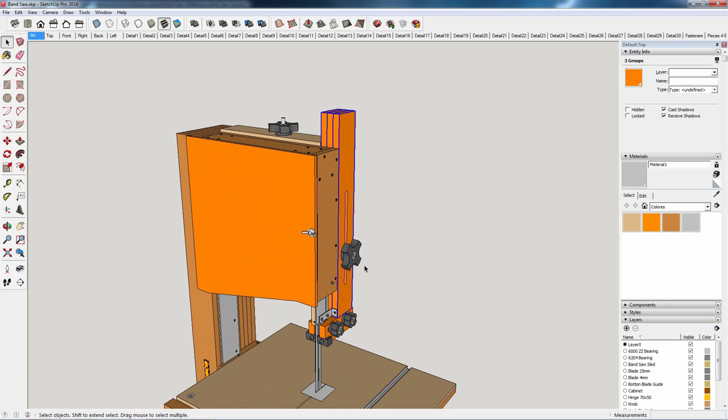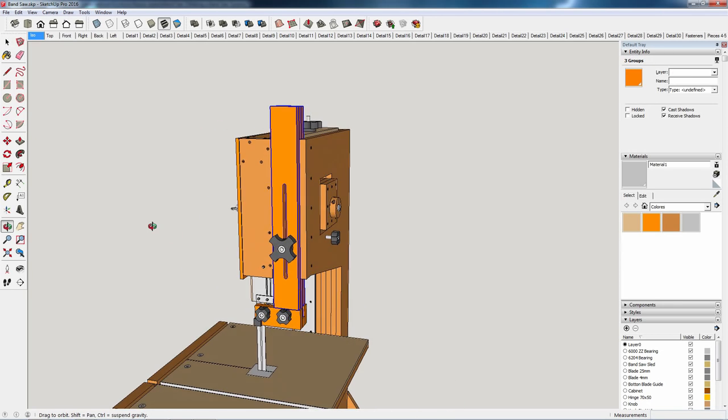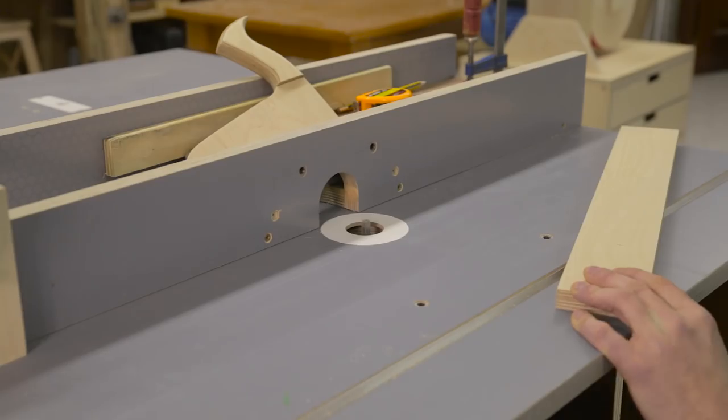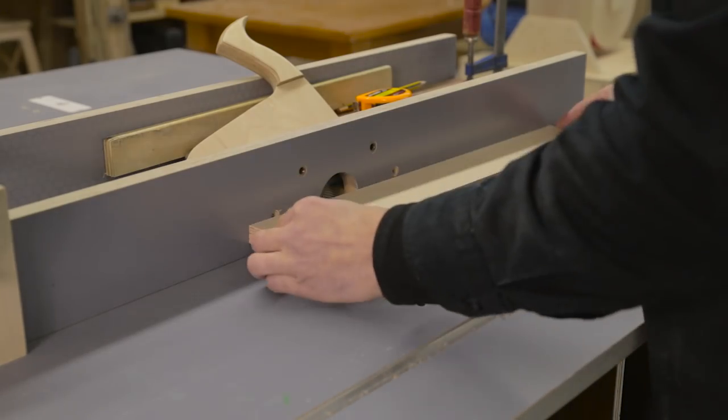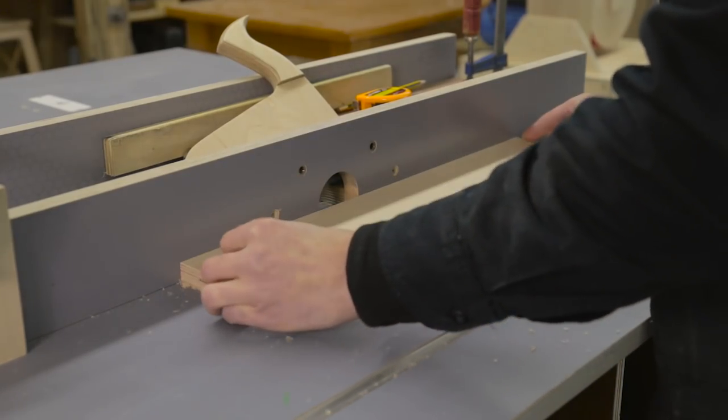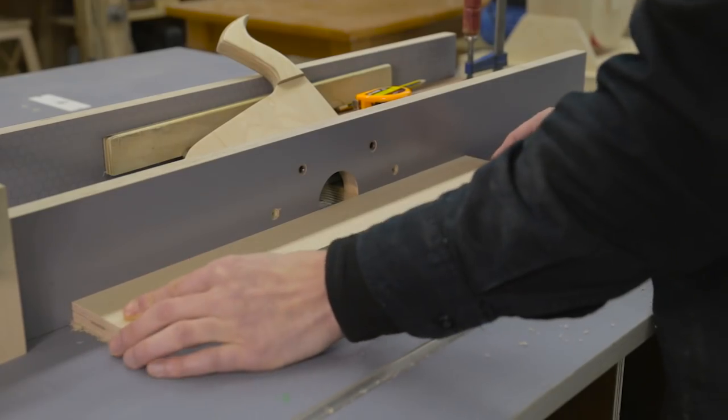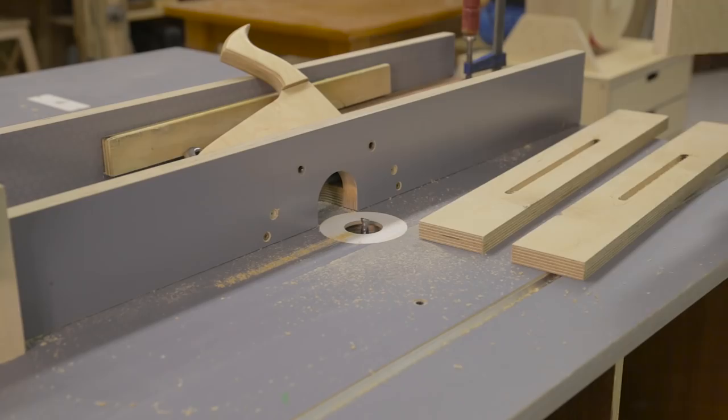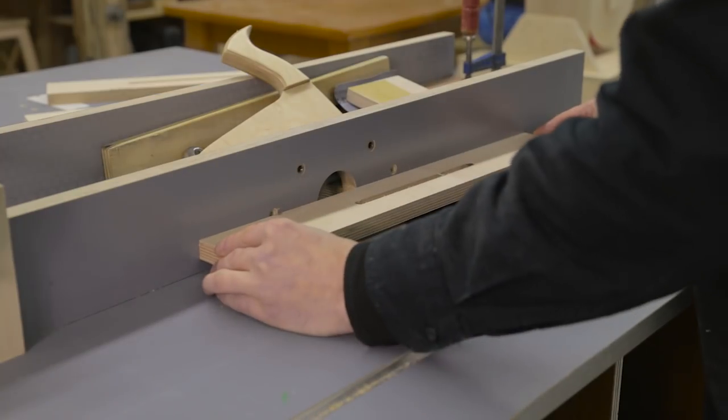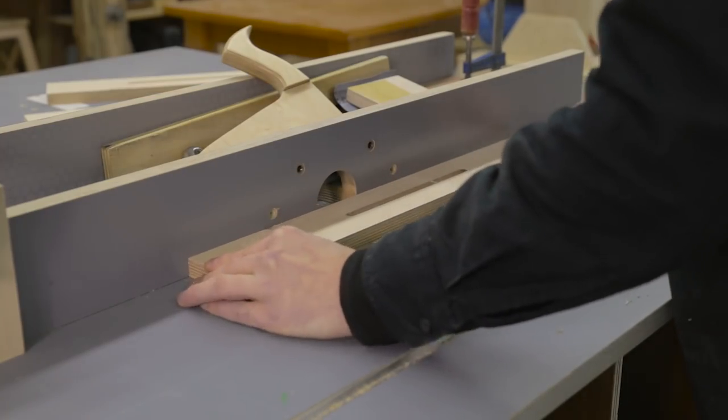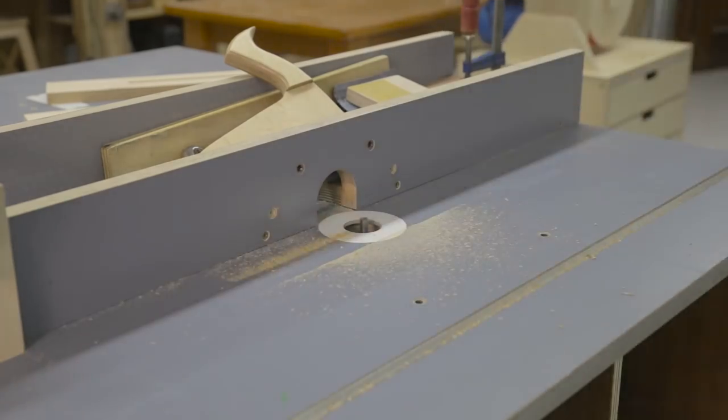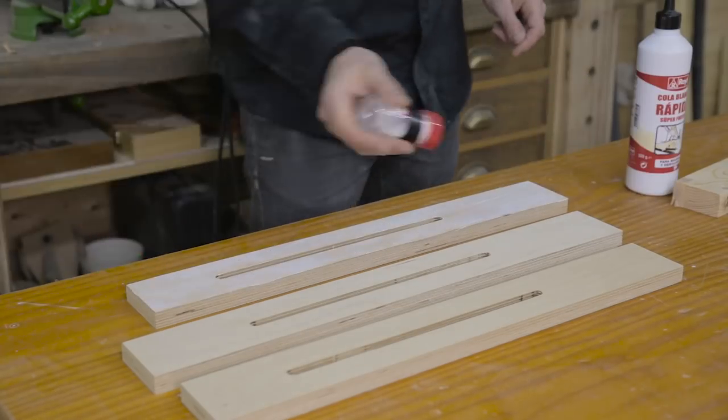It's time to machine the parts that make up the upper guide post. After cutting the three parts to size, I prepare the router to make a groove to adjust the guide's height. After machining them, I can glue them together.